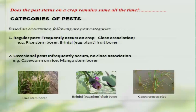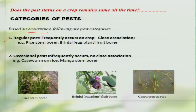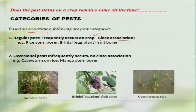First, pests can be categorized based on their occurrence. We can categorize them as regular pests — these pests will regularly occur on a particular crop and have a very close association with it. For example, the rice stem borer or the fruit borer in case of brinjal. Whenever you grow these crops, these pests are bound to occur, indicating their close association with the crop.